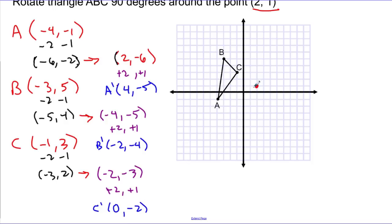So let's plot these points and see what it looks like. So my A prime is 4, and down 5. That would be right here. That's A prime. (-2, -4). That would be this point. And C is at (0, -2). There's my C prime.